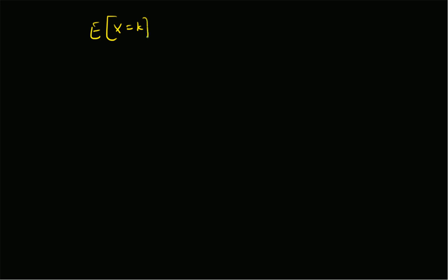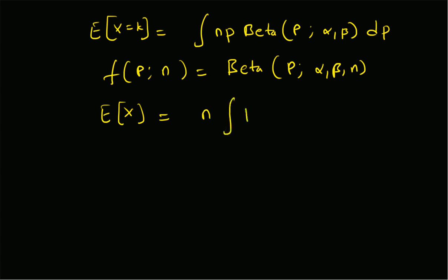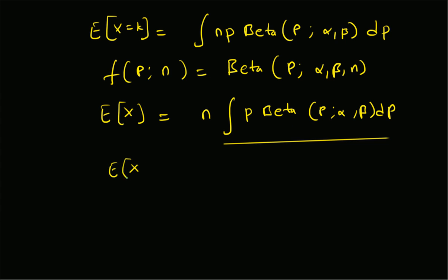So the mean of x is equal to the integral of n times p times f(p), where f(p) is a beta distribution with parameters alpha and beta. Dropping the dependence on n in the density of p, the expectation of x is n times the integral of p times the beta distribution beta(p; alpha, beta) dp. This integral is nothing but the mean of p for a beta random variable, which is alpha divided by alpha plus beta. Therefore, the mean of x is simply n times alpha divided by alpha plus beta.